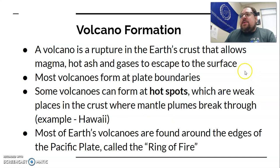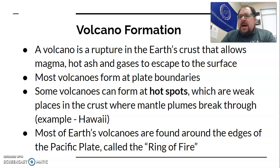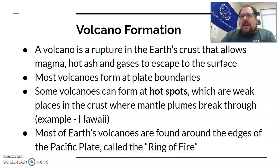The definition of a volcano is just a rupture in the earth's crust that allows various materials to reach the surface. It's not always liquid lava — we tend to think of them stereotypically as liquid lava, but sometimes it's ash, gas, cinder, or solid material. It's usually some combination of magma, hot ash, gas, and rock.